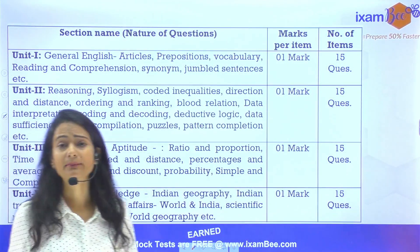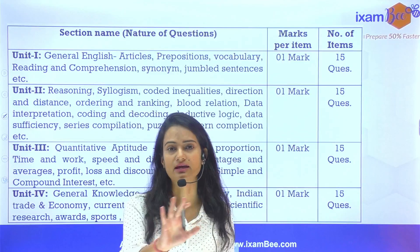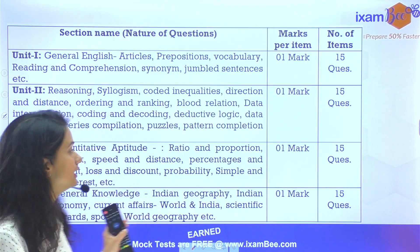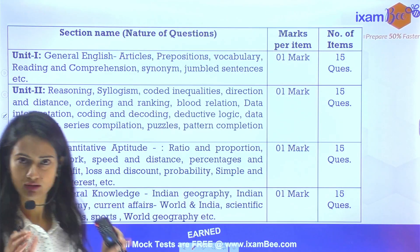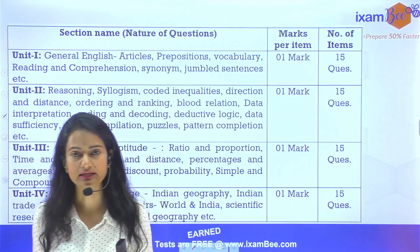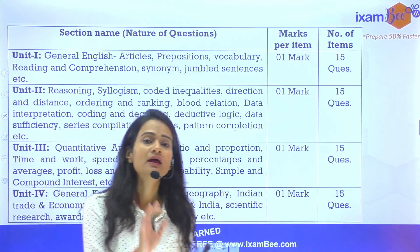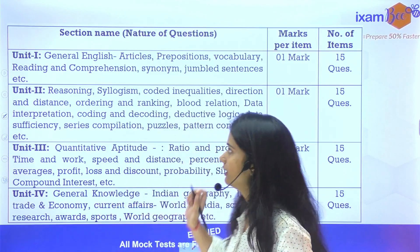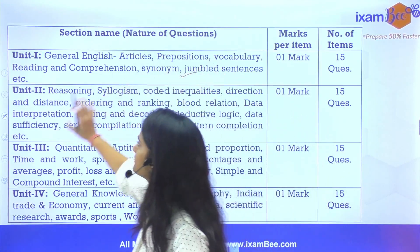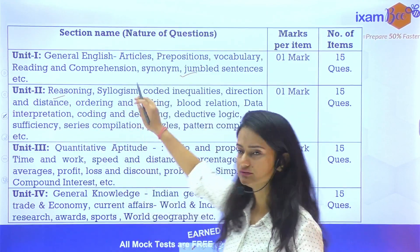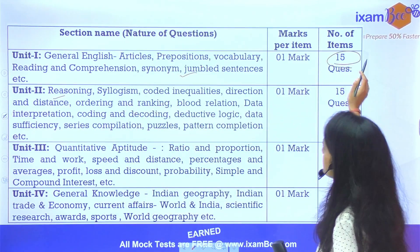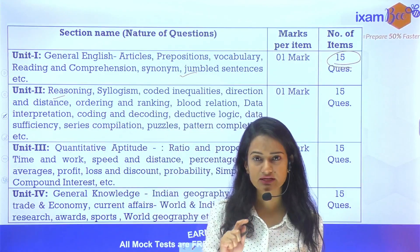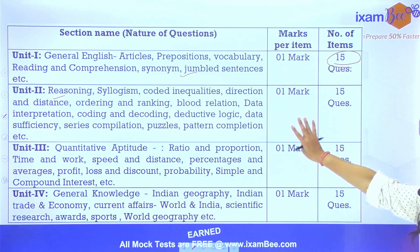Pehle woh dekh lete hai ki isme syllabus kya hai. Agar aap ne notification dekha hoga, toh yeh pura mention kiya gaya tha. Alag-alag topics ka description diya tha. Mainly 5 sections hai. Pehla hamara General English ka hai — 15 questions aayenge, 1 mark each, 15 marks ke. Second hamara Reasoning wala hai — reasoning ke bhi 15 questions, 1-1 marks ke.